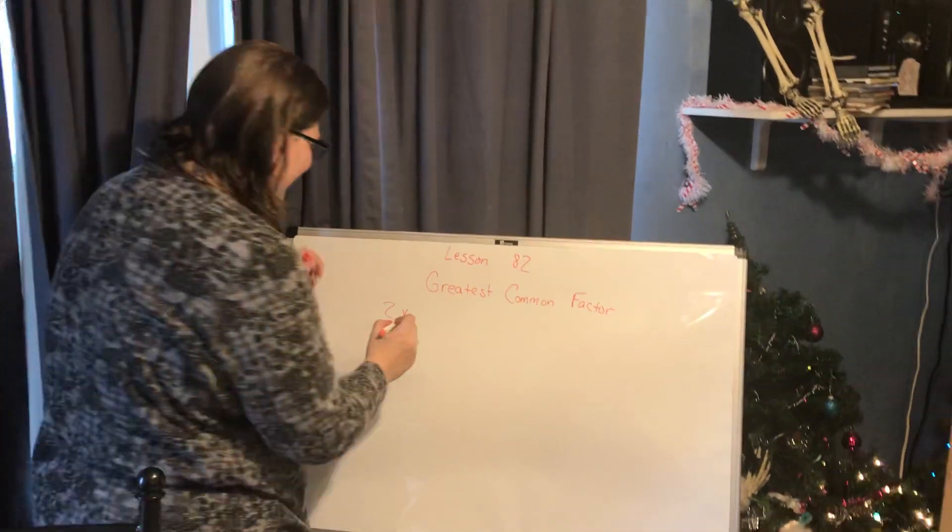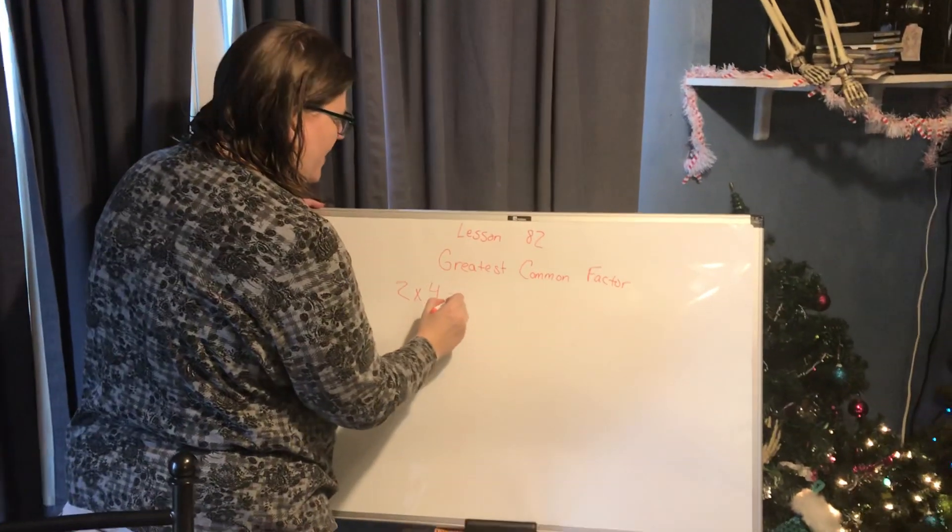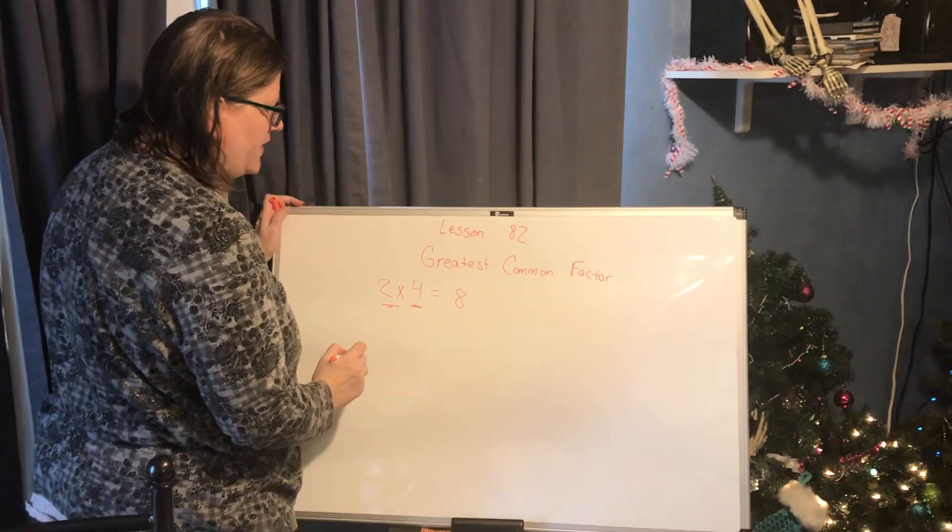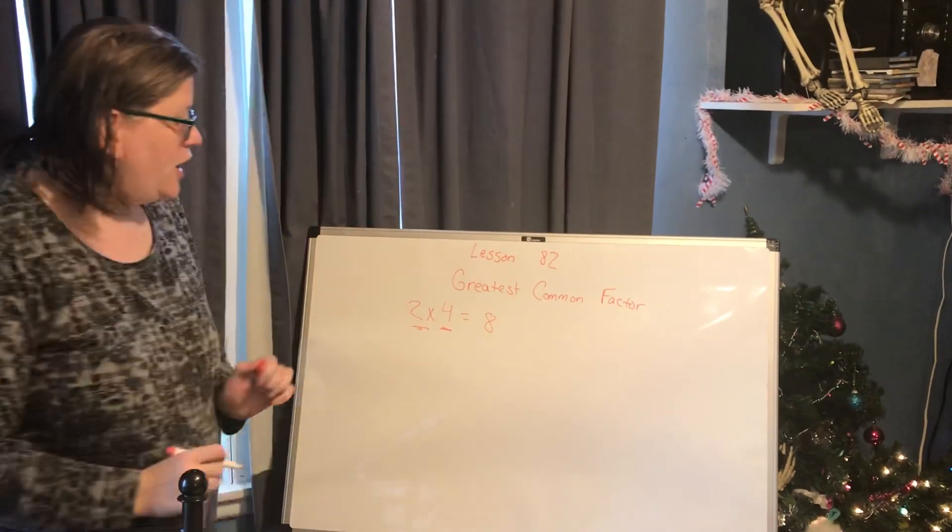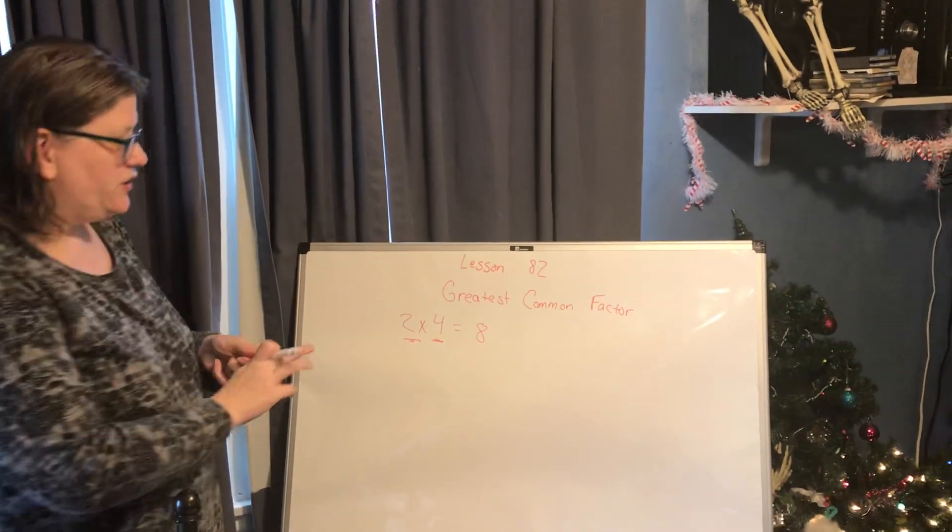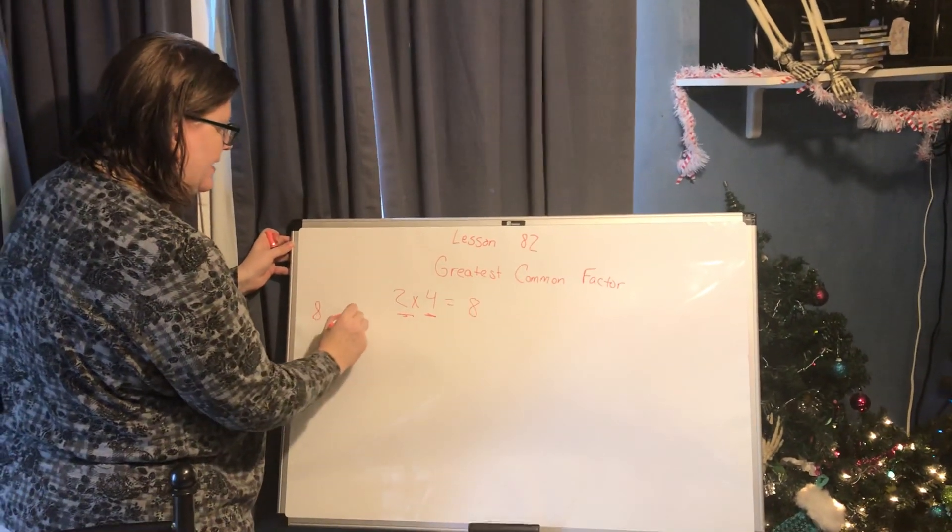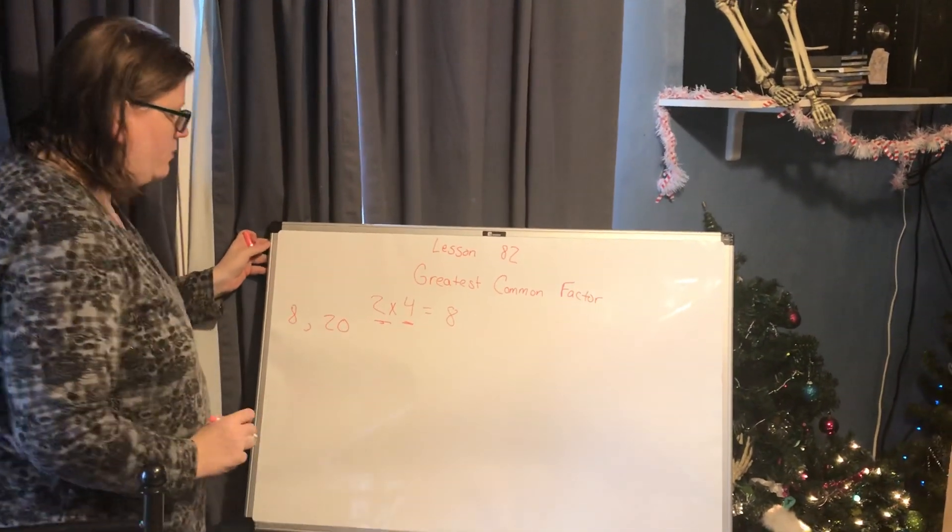For example, 2 times 4 equals 8, so 2 and 4 are factors of 8. What we look for is we take two numbers, such as 8 and 20, and we list all the factors of each number.